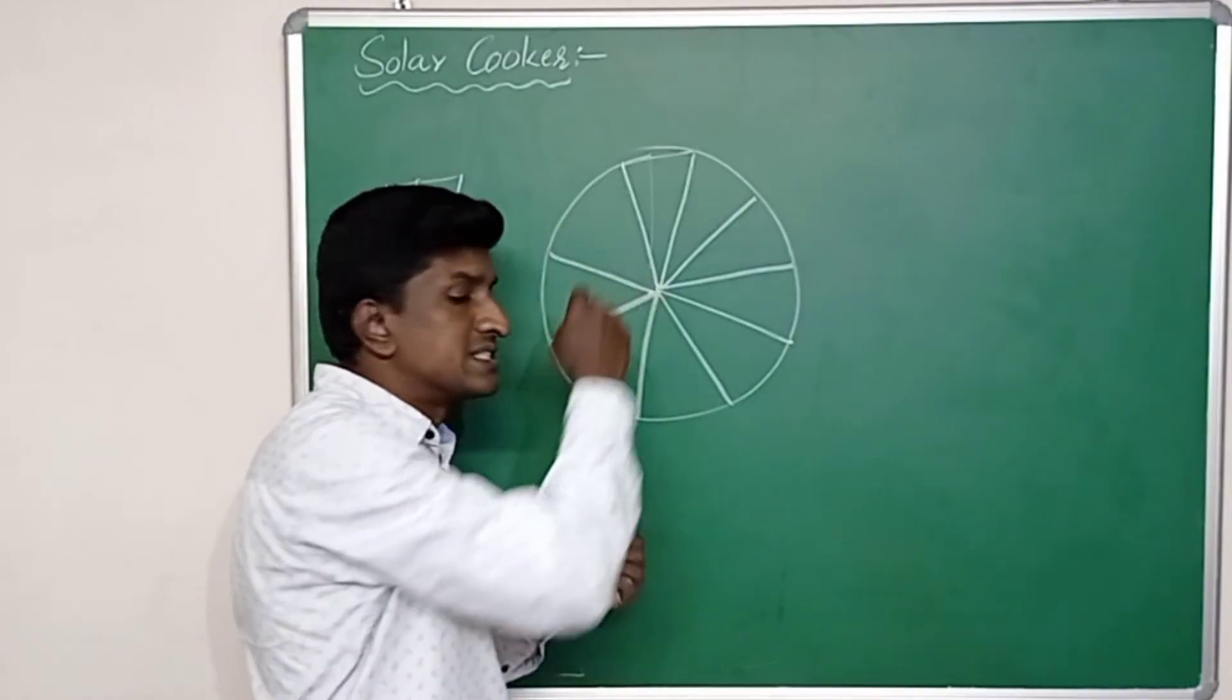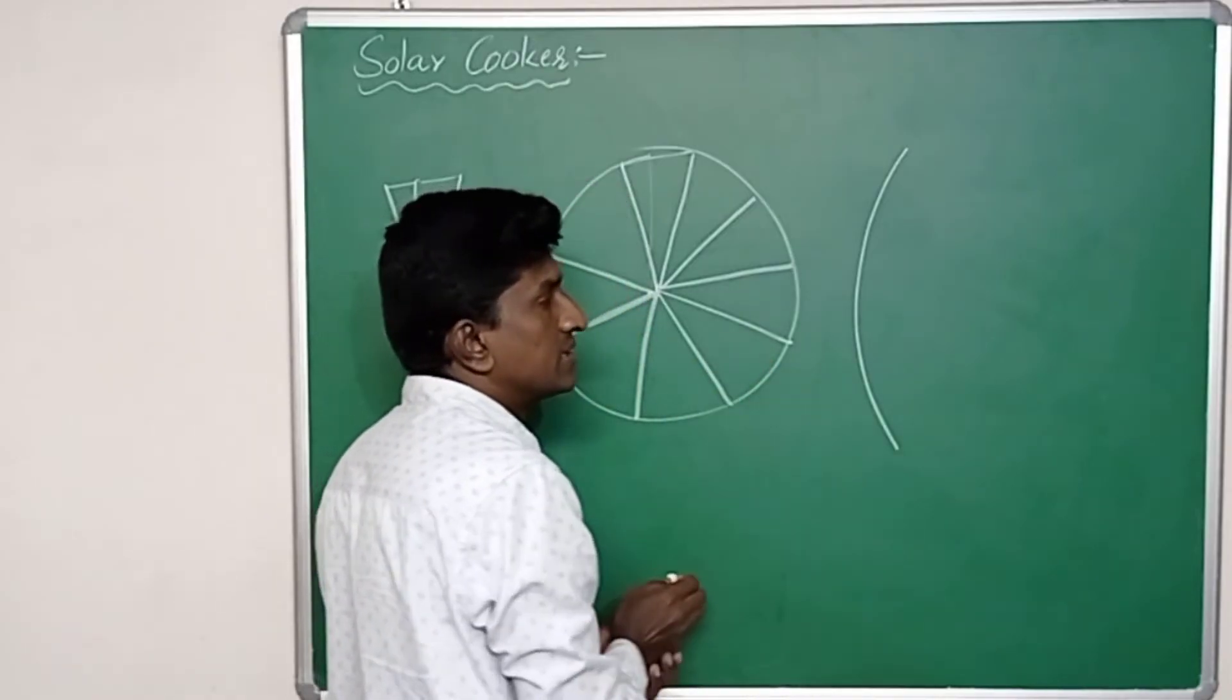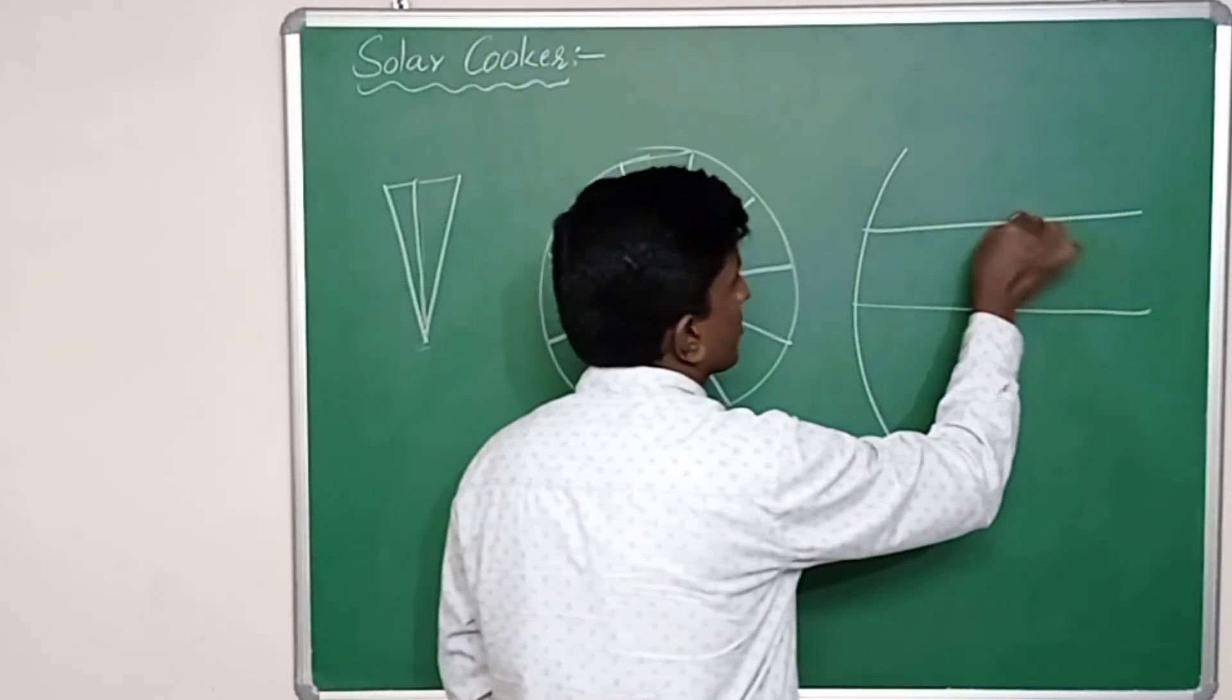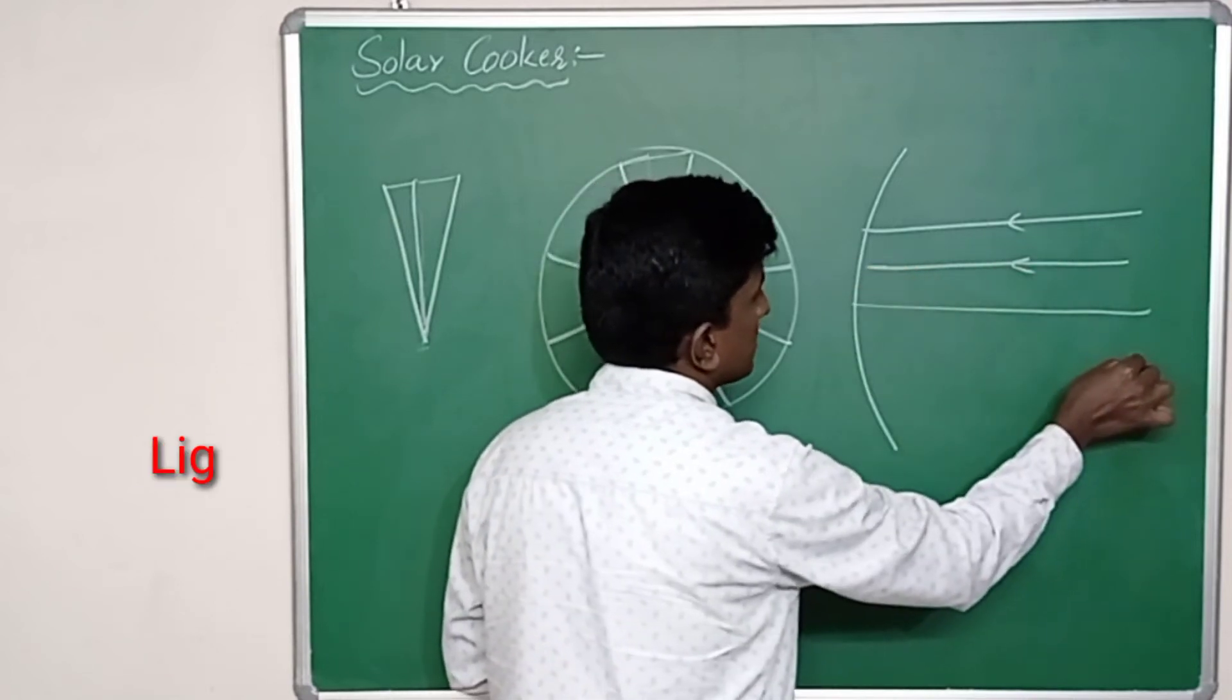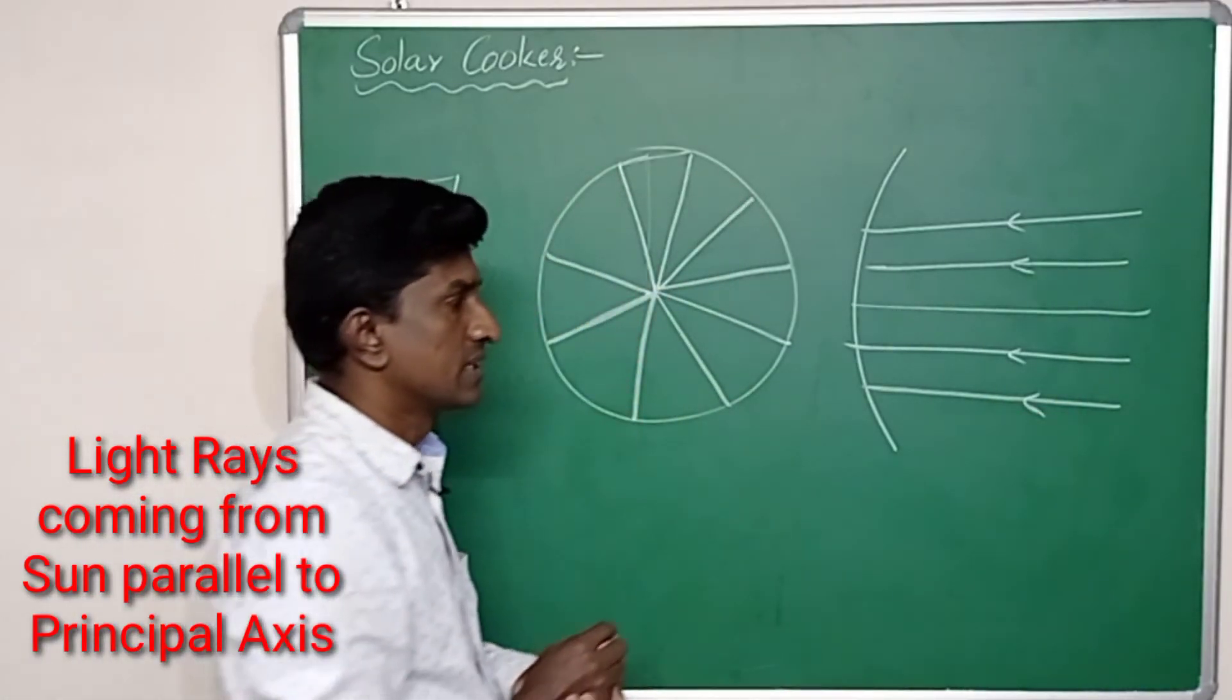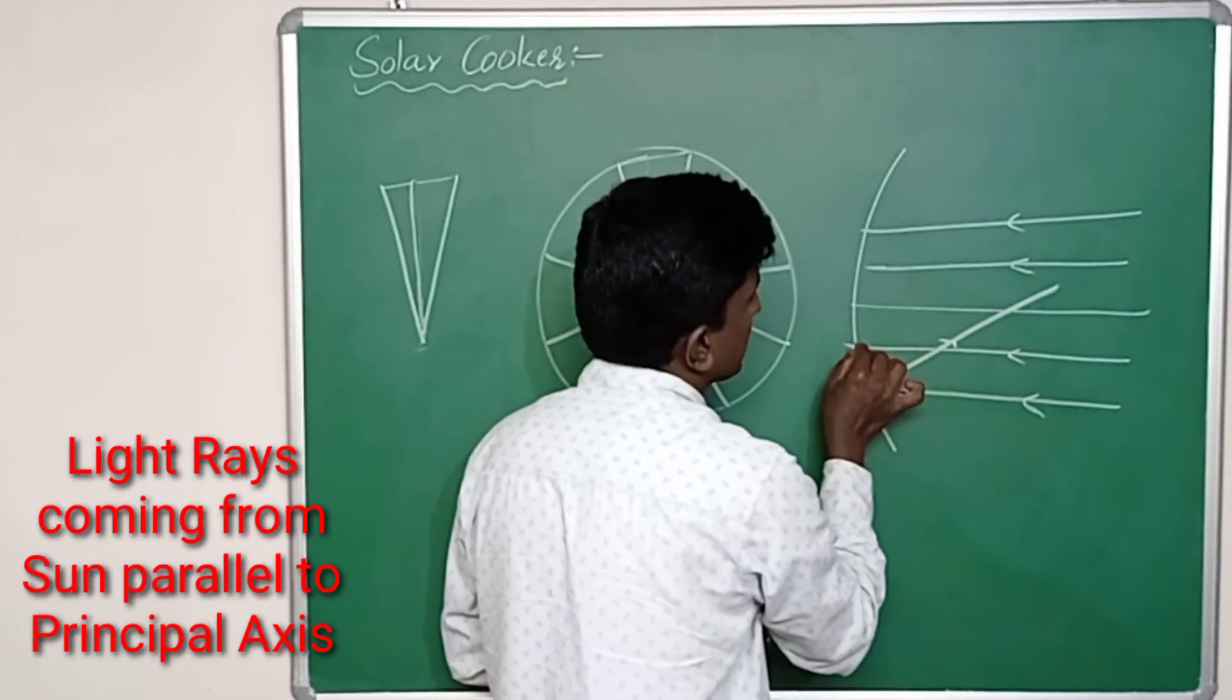Now let us say this is the surface, it's a side view. Let us say this is the principal axis. The light rays are coming from the sun and incident on that concave surface.